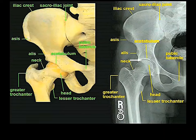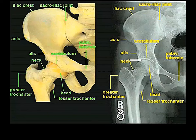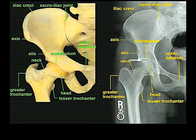Look at this radiolucent zone here. Why is it radiolucent? Because there's space there — not air, but cartilage. There's lots of cartilage on the head of your femur, and somewhat less but certainly present on the cup of your acetabulum. That separates these bones and gives you the impression that there's something like air or fluid in there, when in fact this is just cartilage.